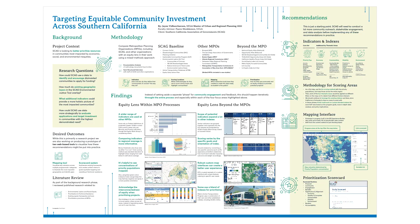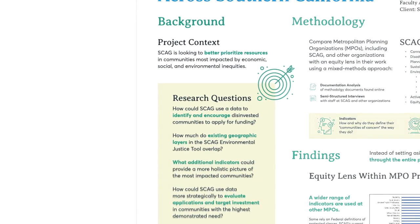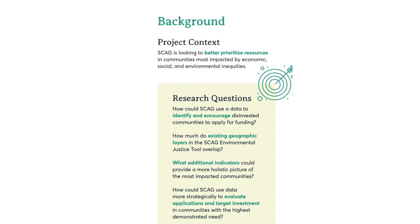Here's the zoomed out view of the entire poster to start. Let's start on the left side in the background section. SCAG is looking for ways to better prioritize resources in communities most impacted by a variety of inequities. To do that, we have four main research questions.